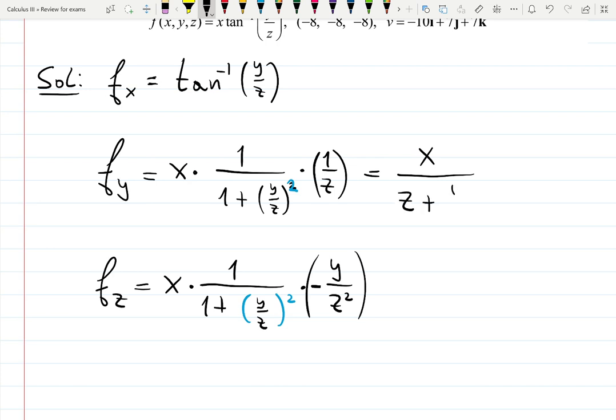So it's going to be z plus y squared over z, because z cancels out with one of these z's, but there was z squared, so now there's still 1 z left.